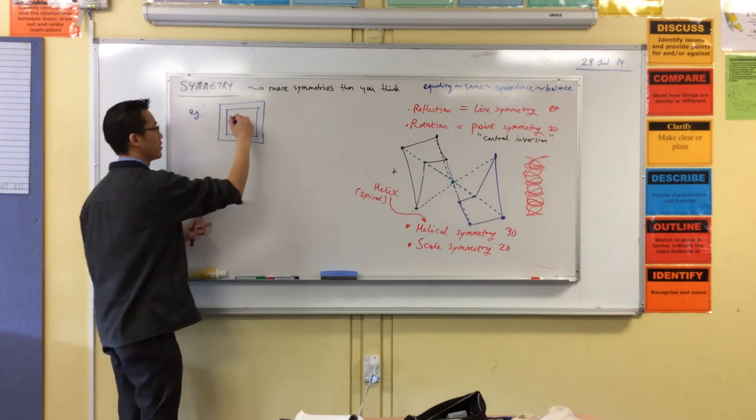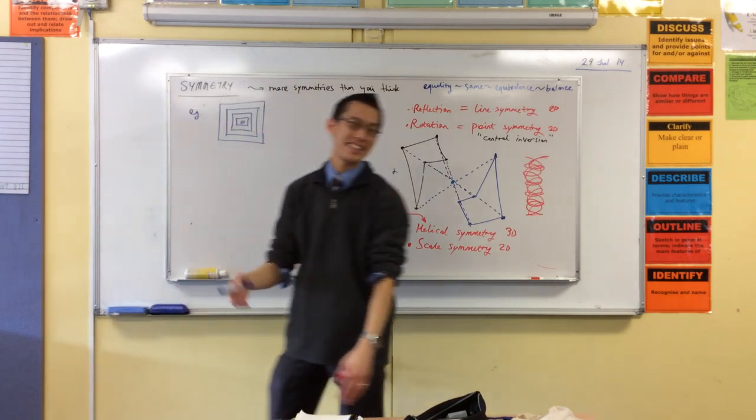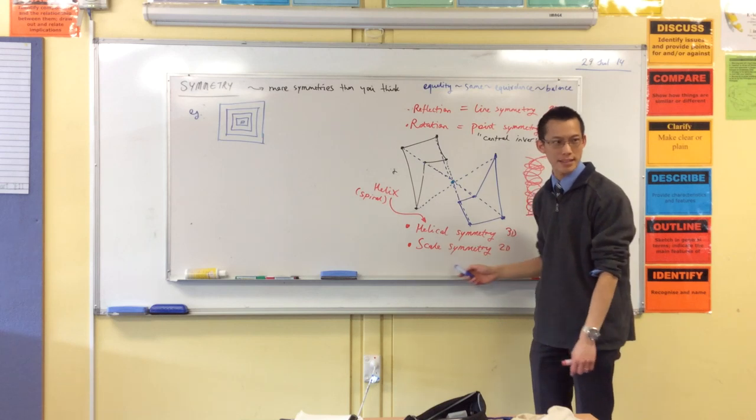There it is. I can keep going. Right, I can go lots of times. Yeah, that's right. It's square-ception. Hooray, okay? Now, like I said, this is a boring, simple example, just so you can wrap your head around scale symmetry.